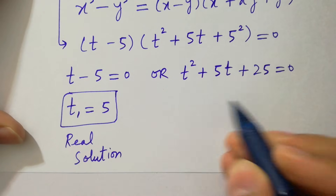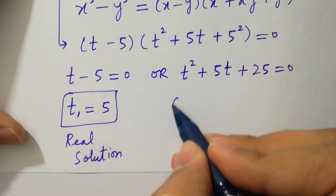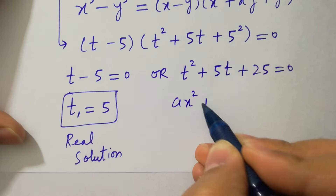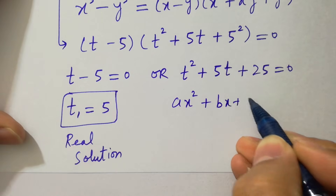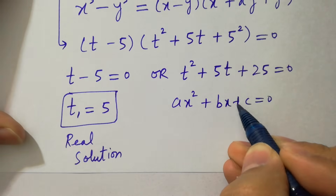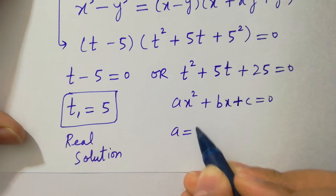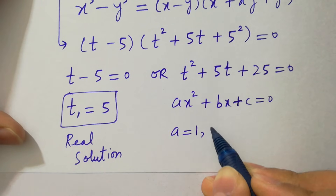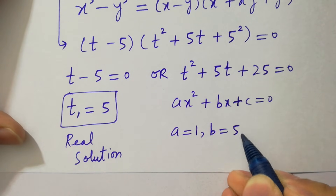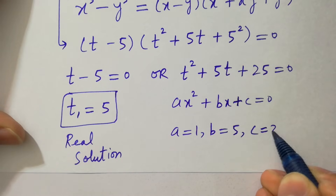Now this is our quadratic equation: ax squared plus bx plus c equals 0. By comparing, a is equal to 1, b equal to 5, and c equal to 25.